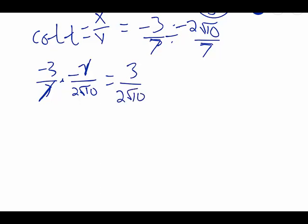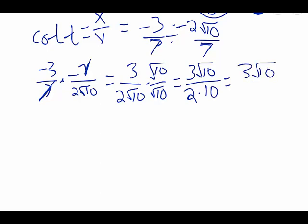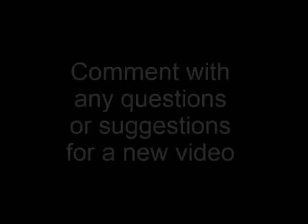To get rid of it, we multiply top and bottom by that radical. Multiplying across in the numerator gives us 3 square roots of 10, and in the denominator, move over the 2, square root of 10 times square root of 10 is 10. To wrap up here, all we have to do is multiply out that denominator to get 20. Since 3 over 20 does not reduce and square root of 10 does not reduce, this is our answer for cotangent of t: 3 square roots of 10 over 20.